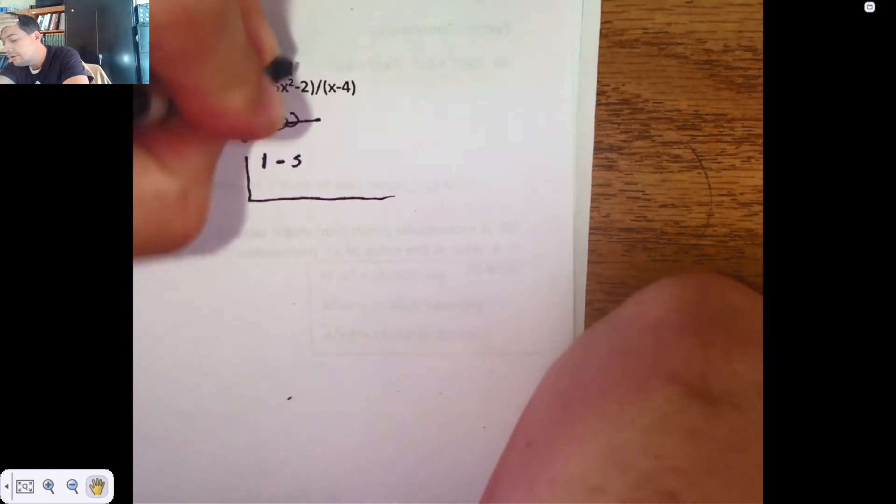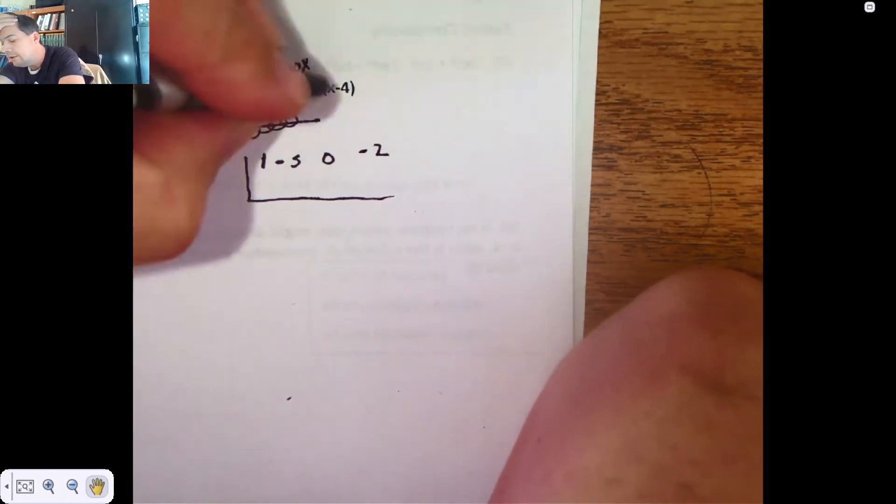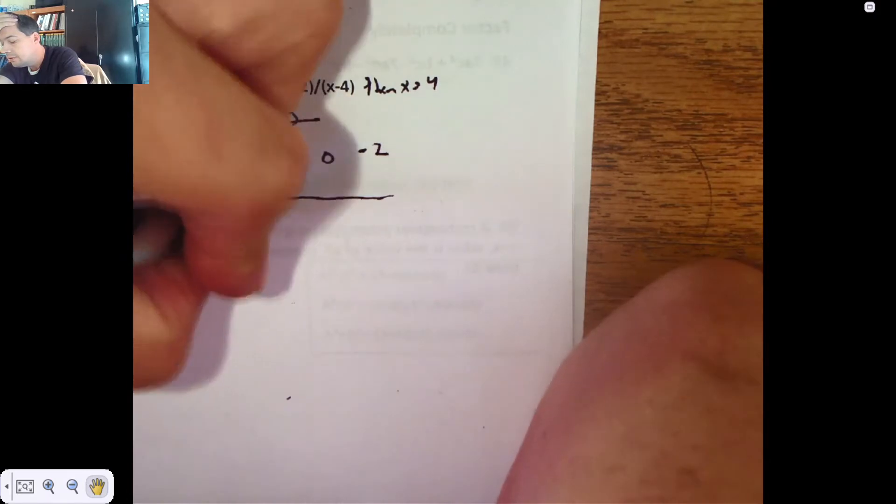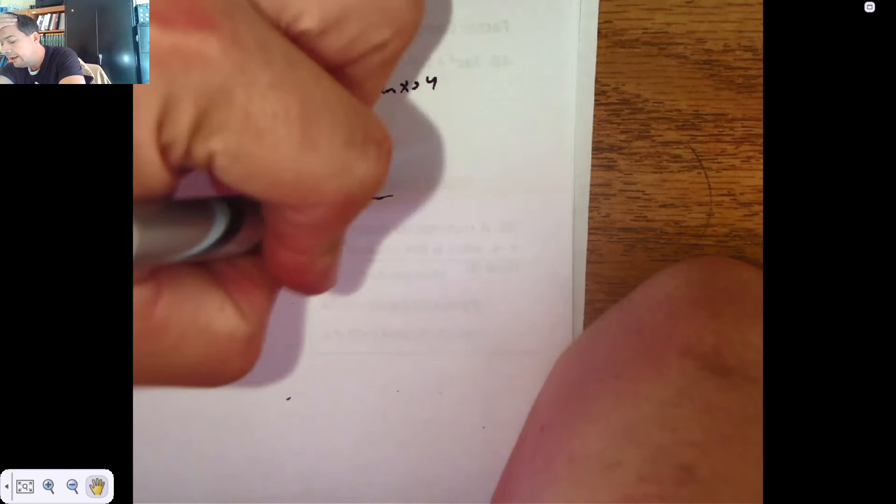This one's going to require placeholders because there's that 0x that's missing. So minus 5, 0, negative 2. And if we're dividing by x minus 4, then x is 4. So we're going to drop the 1, we're going to multiply and add, multiply and add, multiply and add.